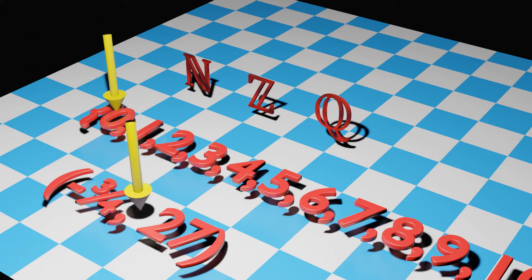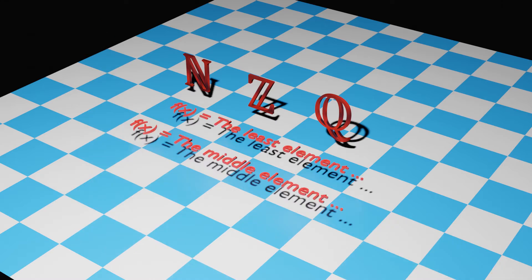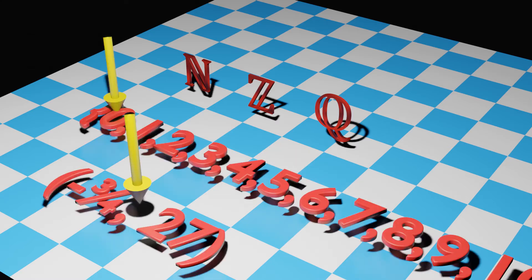Even if our sets are infinite but countable, like the set of natural, integer, or rational numbers, for example, we don't need the axiom of choice. We can choose the least number in the case of a subset of the naturals, or the middle number in the case of an open interval of the rational numbers.